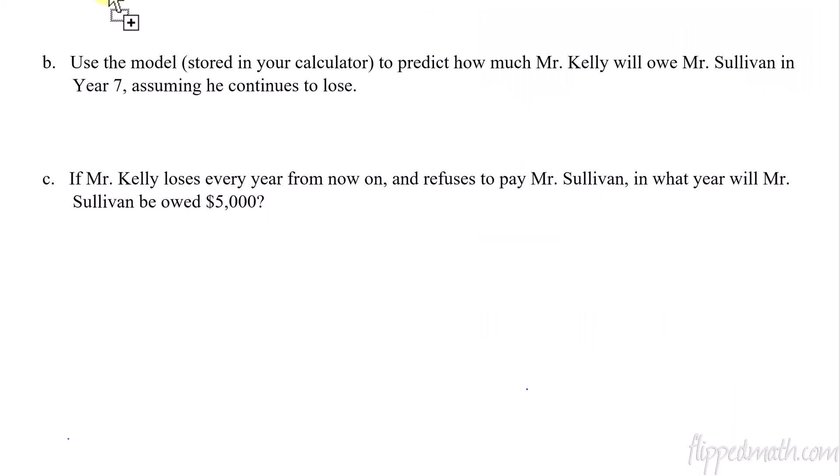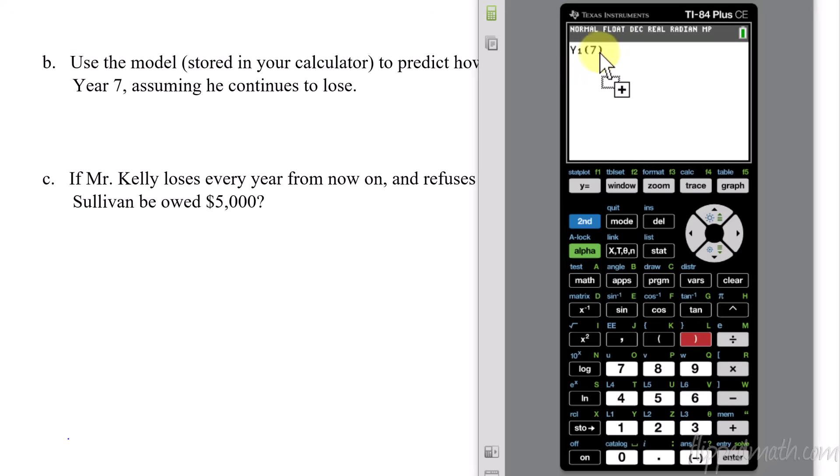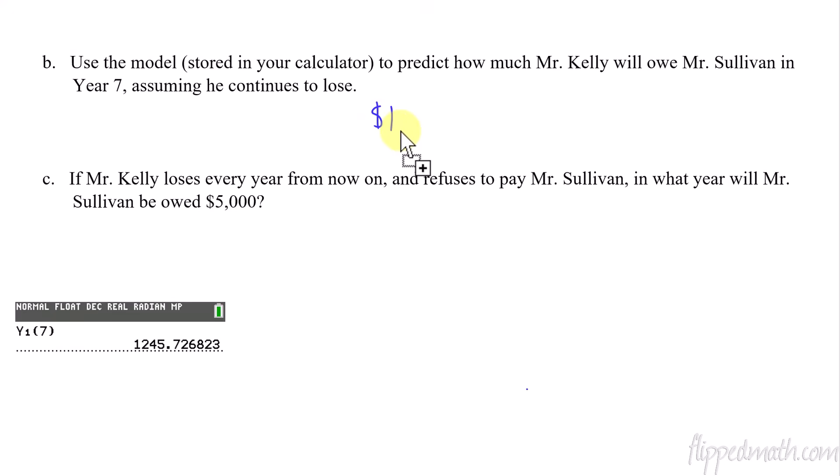So let's go to the next question here. What is the question? We're going to use the model that we've stored in the calculator to predict how much Mr. Kelly will owe Sullivan in year seven. Assuming he continues to lose, right? And he never makes any payments. So let's go back to second quit. Let's go back to the main screen. I'm going to take the function that's y1 and plug in a seven. Now, this is really cool. Alpha, f4, y1. So that pulls up my y1. And now you can just use function notation. Watch this cool stuff. And I just plug in a seven. So I open my parentheses, type in seven, close parentheses. That's function notation. Take function that's in y1, plug in a seven. Enter. There we go. I'm going to drag this over. So he owes Mr. Sullivan in year seven $1,245. Round it to the nearest penny, 73 cents.